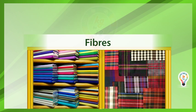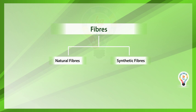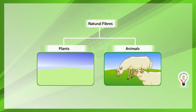The clothes we wear are made up of fabrics. Fibers are of two types: natural fibers, which are obtained from natural resources like plants and animals.